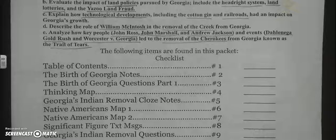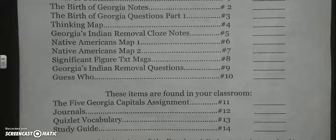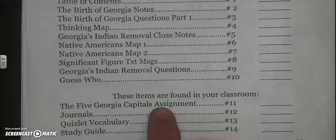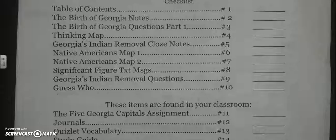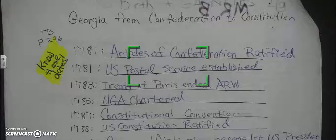There were ten things in your packet. We also have the journals attached to it. You have your five Georgia capitals assignment that should be getting finished in the classroom, and your Quizlet vocabulary also in the classroom. When we look at number two, these were some notes that we took — a timeline over Georgia from Confederation to Constitution.